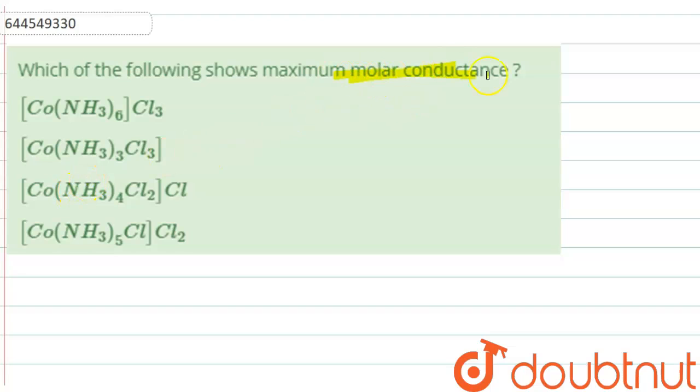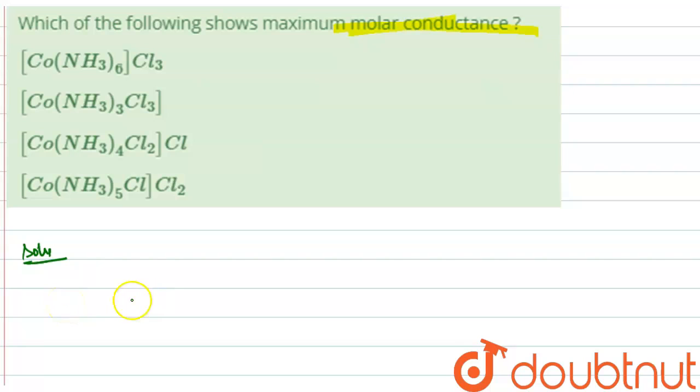of the following shows maximum molar conductance? We have four options, four complex salts. Molar conductance is directly proportional to the number of ions. Let's see the first option.